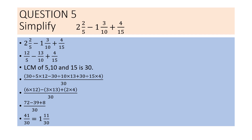Question 5: Simplify 2 and 2 by 5 minus 1 and 3 by 10 plus 4 by 15. Converting mixed numbers: 2 into 5 plus 2 gives 12 by 5, and 1 into 10 plus 3 gives 13 by 10. So the question is 12 by 5 minus 13 by 10 plus 4 by 15.